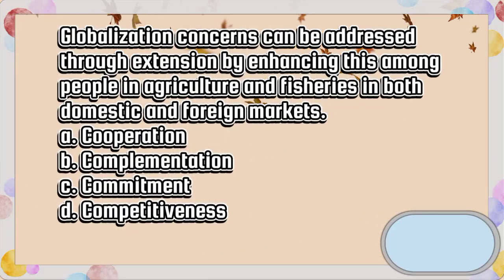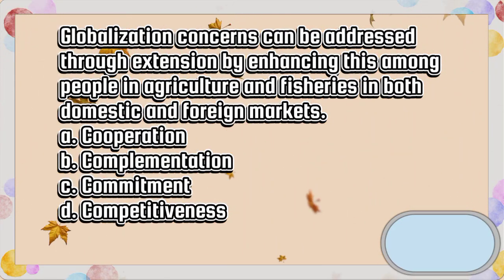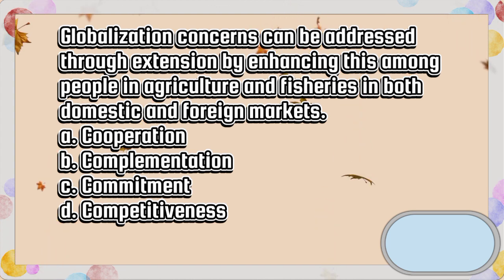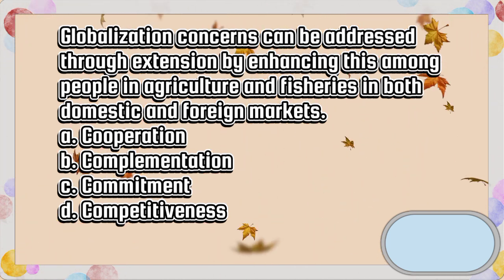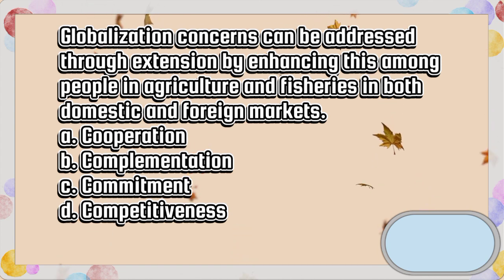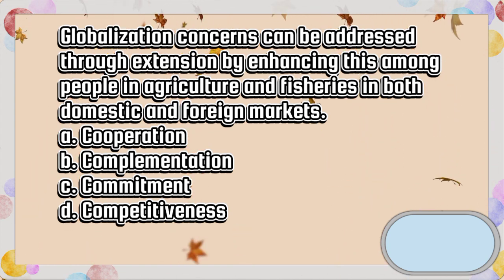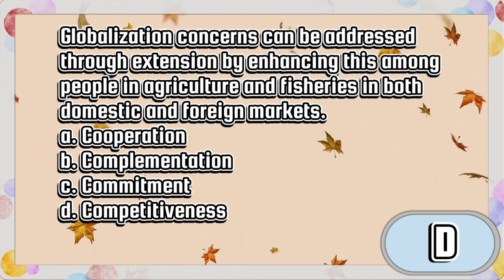Globalization concerns can be addressed through extension by enhancing this among people in agriculture and fisheries in both domestic and foreign markets. A. Cooperation. B. Complementation. C. Commitment. D. Competitiveness. The answer is letter D.